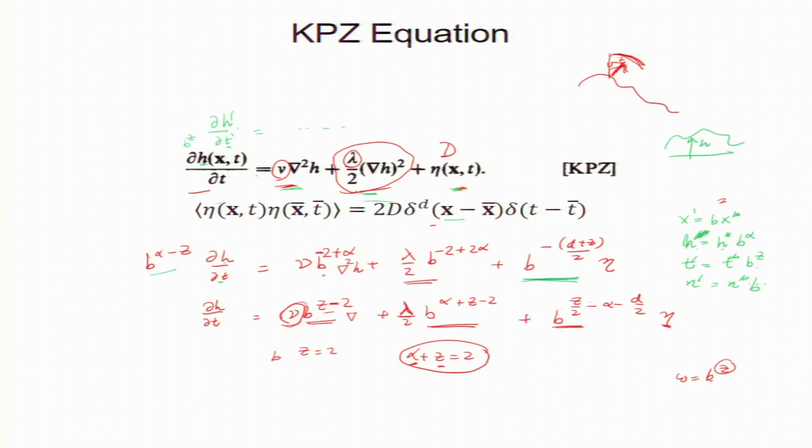So, now, we look at the viscous term. This will look like that. This is simple algebra. In fact, you can easily see that Laplacian will give you b minus 2 and h will give you b to the power alpha.